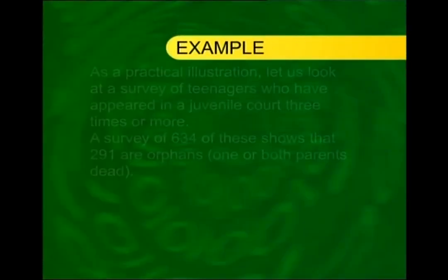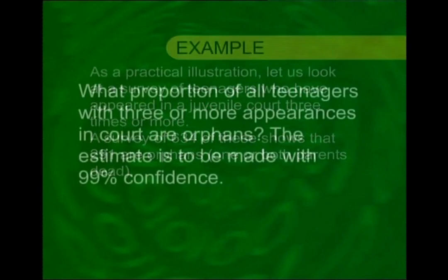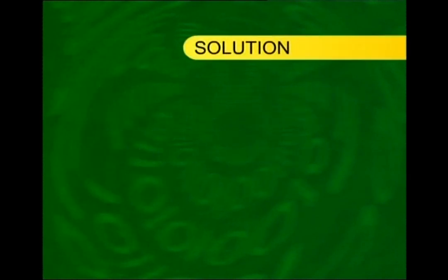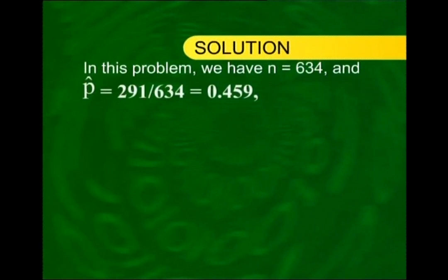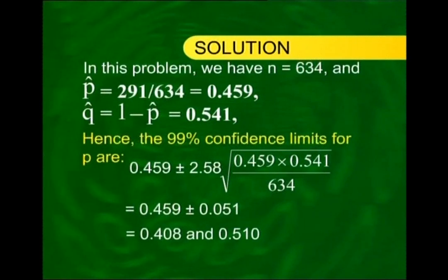Let us now apply this formula to an example. A survey of teenagers who have appeared in a juvenile court three times or more: a survey of 634 of these shows that 291 of them are orphans — one or both parents dead. What proportion of all teenagers with three or more court appearances are orphans? The estimate is to be made with 99% confidence. Note that n equals 634, which is a large sample size, so the formula is valid here.